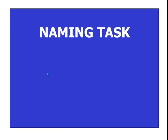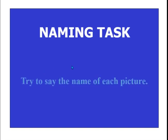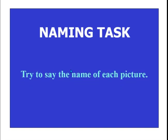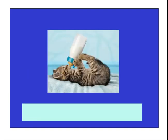First, you'll do this task for me — a naming task. So try to say the name of each picture as I show you. There are two things you can see: a cat and a bottle.